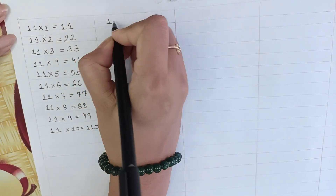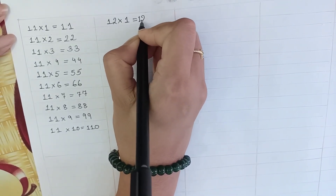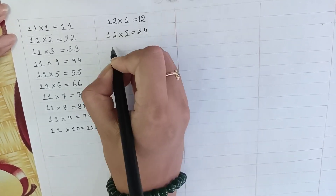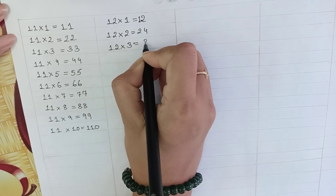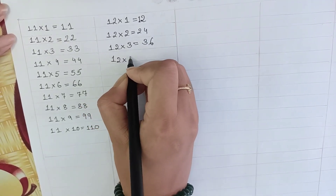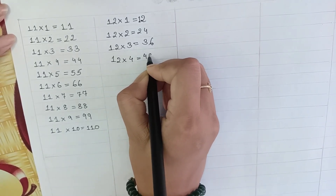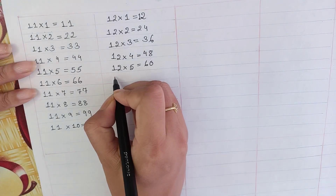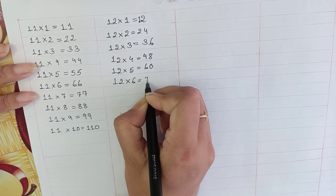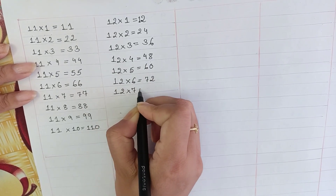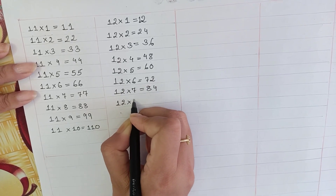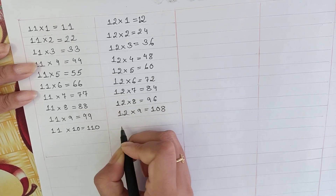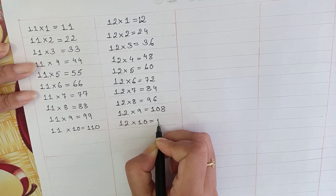Next: 12 into 1 is equal to 12. 12 into 2 is equal to 24. 12 into 3 is equal to 36. 12 into 4 is equal to 48. 12 into 5 is equal to 60. 12 into 6 is equal to 72. 12 into 7 is equal to 84. 12 into 8 is equal to 96. 12 into 9 is equal to 108. 12 into 10 is equal to 120.